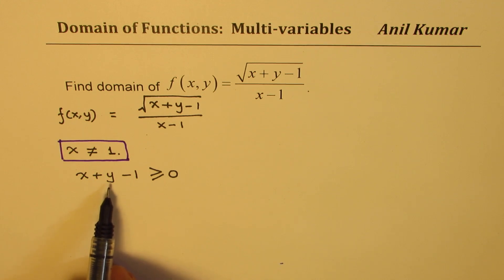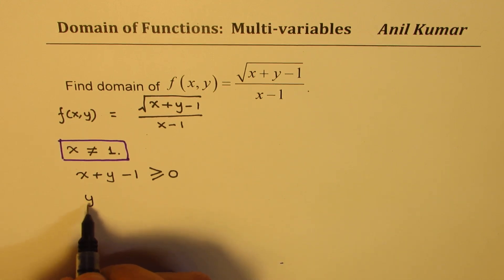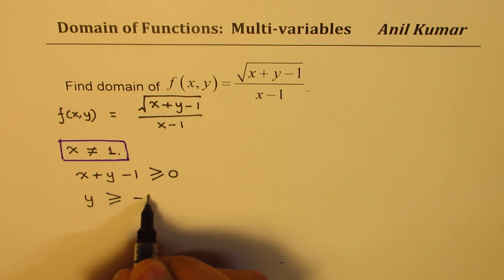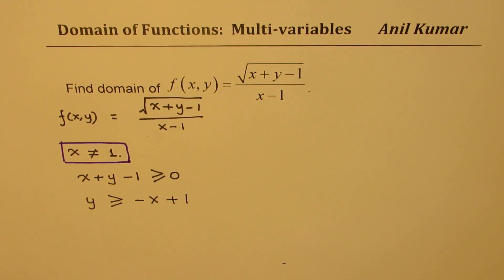Now this equation can be solved like a linear equation. We can isolate y now. So we can say y should be greater than or equal to minus x plus 1. So now, once we write this as an inequality, we can clearly see that the value of y should be greater than minus x plus 1. That means it is a straight line.